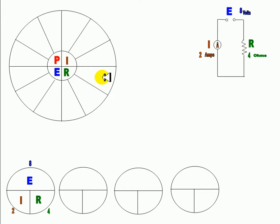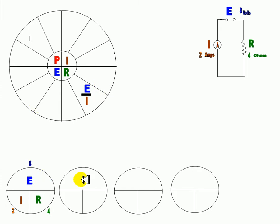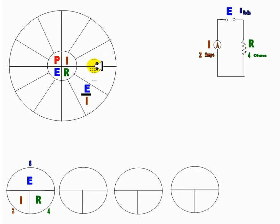Let's take that and put it there. E divided by I is R, and that goes here. Now we're going to start doing this for all of them. E divided by R is also I, so in the I section we're going to put that in there. E divided by R is I — we'll put it right there.